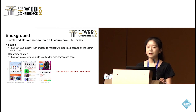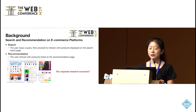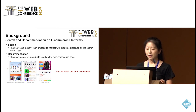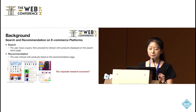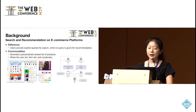First, I will briefly review the background. On an e-commerce platform, a user typically interacts with products in two major scenarios: search and recommendation. A user can interact with products listed on the recommendation page, or they can issue a query and then proceed to interact with products displayed on the search result page. Traditionally, these two scenarios have been regarded as two separate research scenarios. The key difference is that users provide explicit queries for search, while no query is given for recommendation.